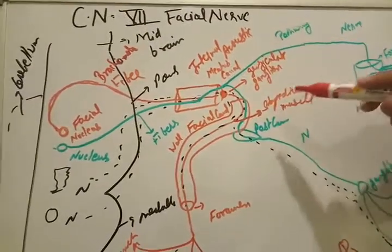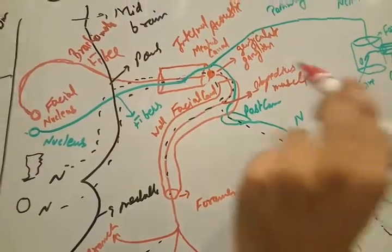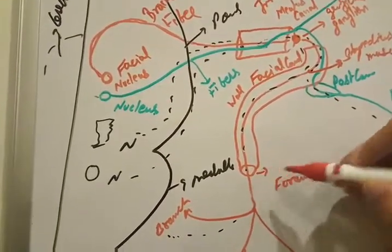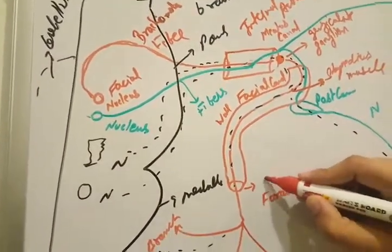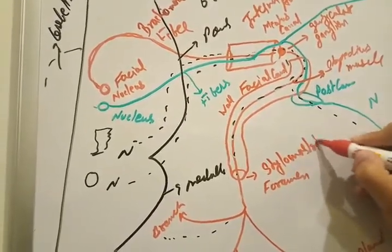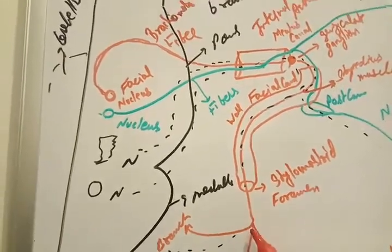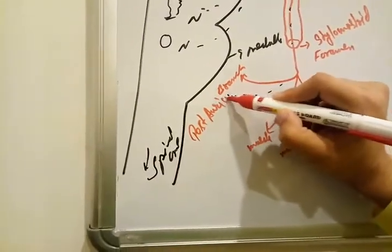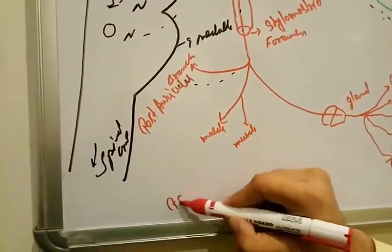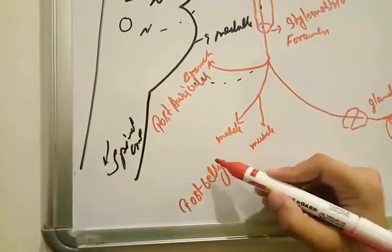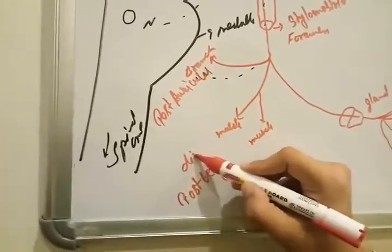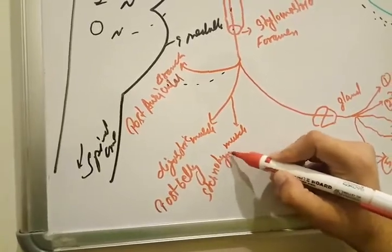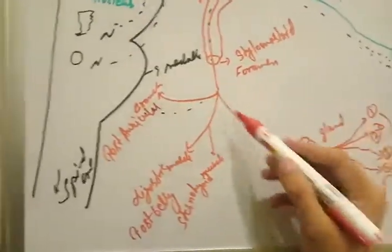The branchial motor fibers divide here to supply the stapedius muscle. A defect in the stapedius muscle causes Bell's palsy, but that is a clinical topic for another time. The nerve then enters the stylomastoid foramen. After exiting the stylomastoid foramen, the branchial motor fiber converts into the posterior auricular branch, and also the posterior belly — with two muscles: the posterior belly of the digastric muscle and the posterior belly of the sternohyoid muscle.